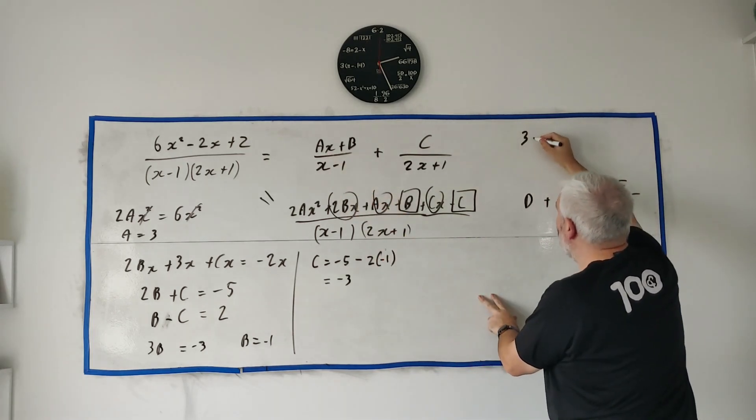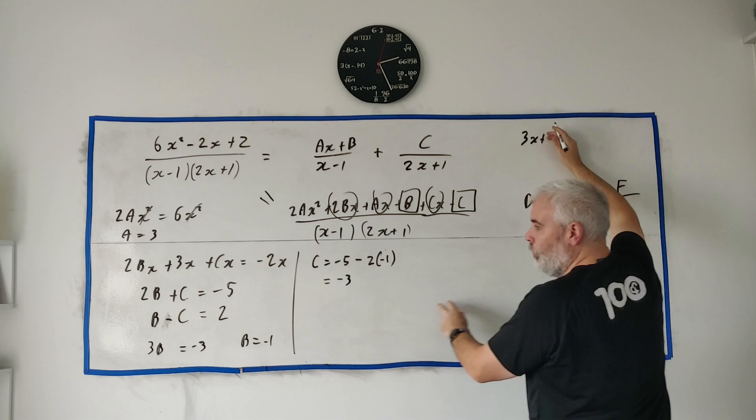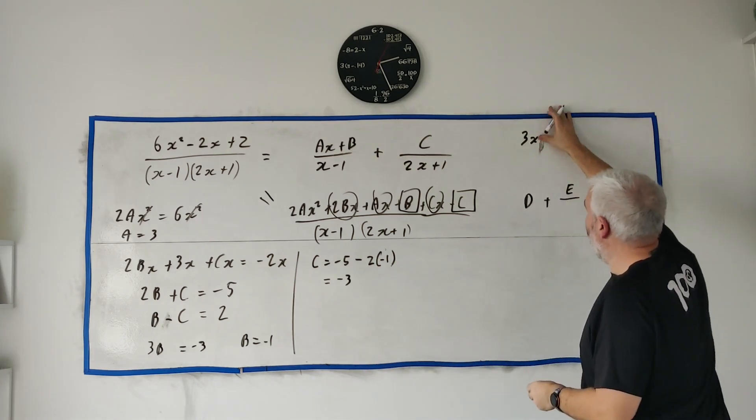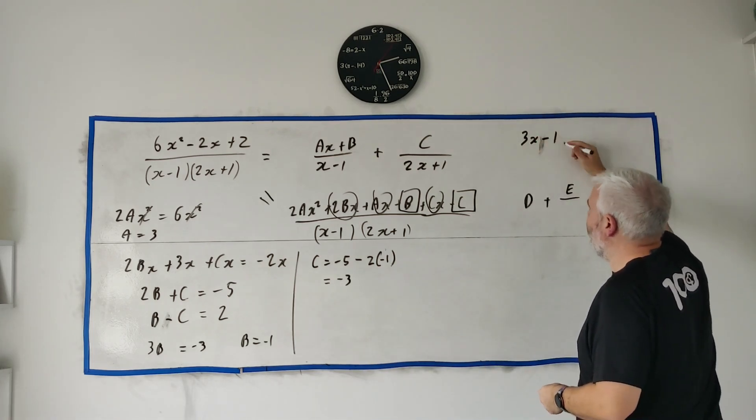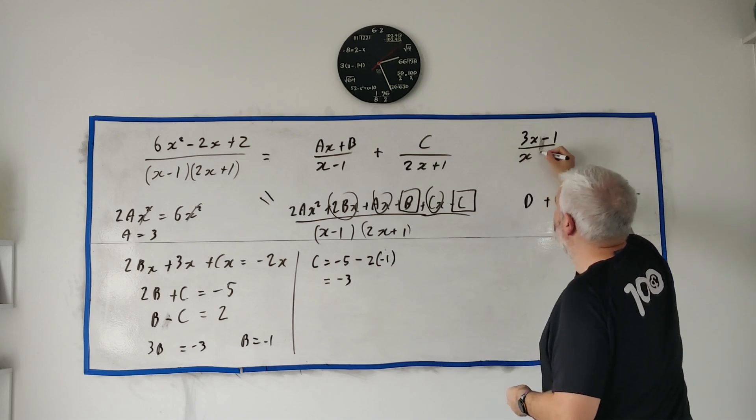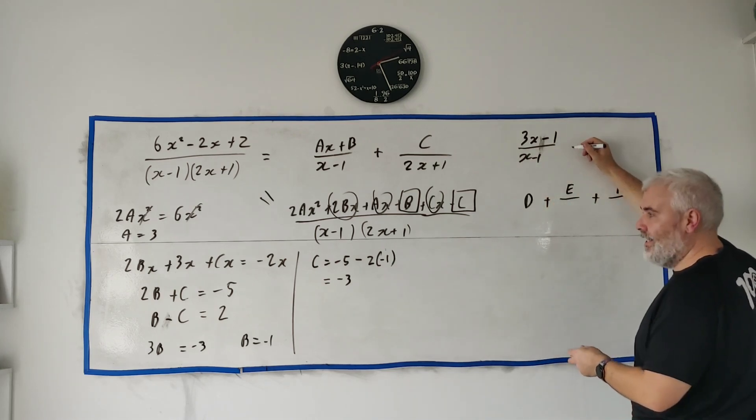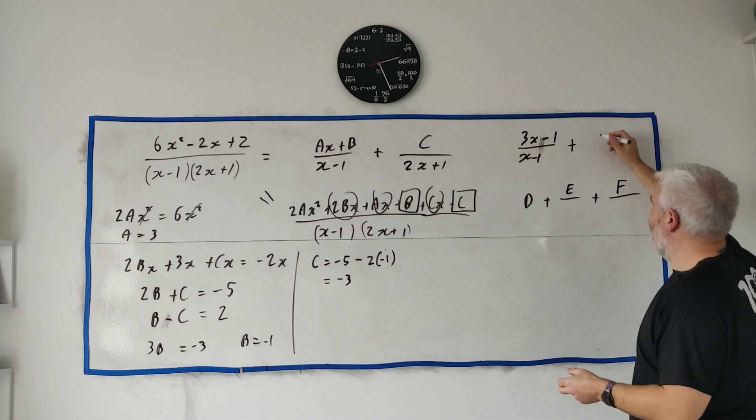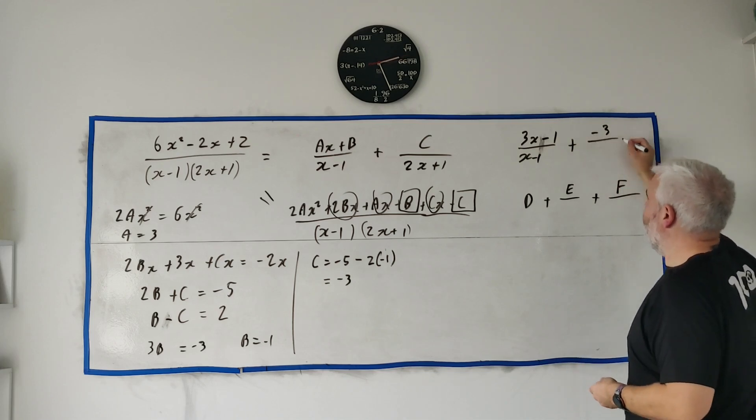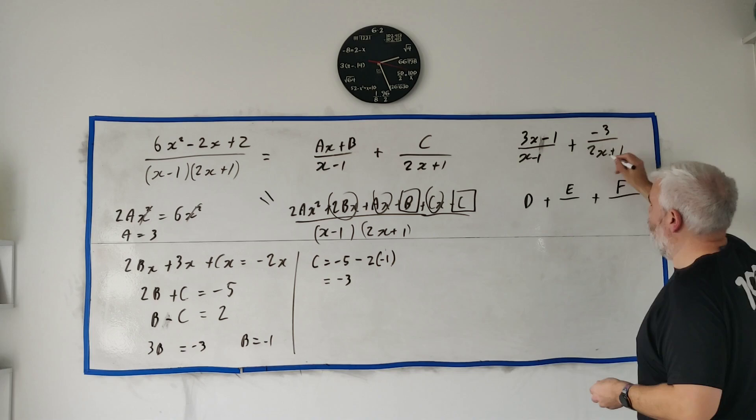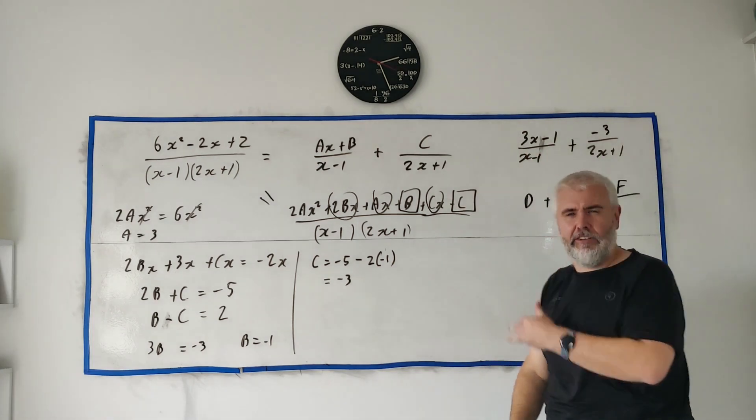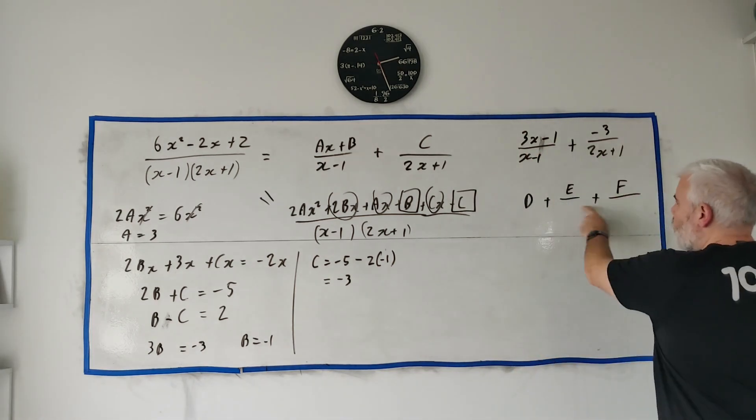My final answer, let me write it up here. My final answer would be 3, a was 3, so 3x plus, sorry not plus, plus minus 1 is minus 1, that's over x minus 1, and then the c would be a minus 3, let's leave a plus here and minus 3 up here, and over 2x plus 1.